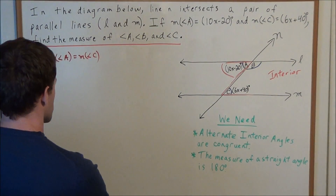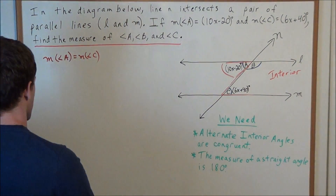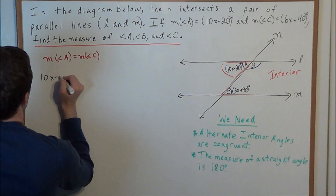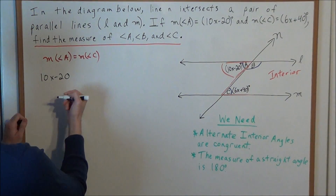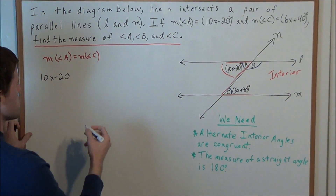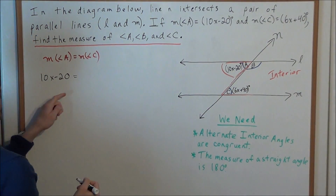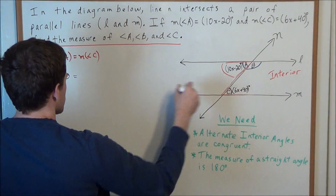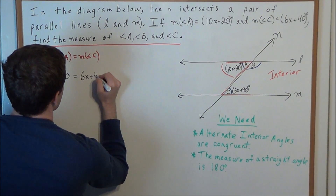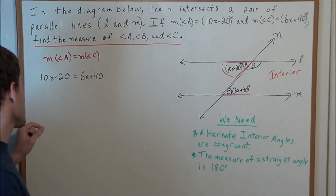So now to solve this problem, the measure of angle A is 10x minus 20 degrees. For now I'm going to leave the degrees out because we're solving for the variable x. And we have angle C is equal to 6x plus 40 degrees. Our goal is to solve for x.